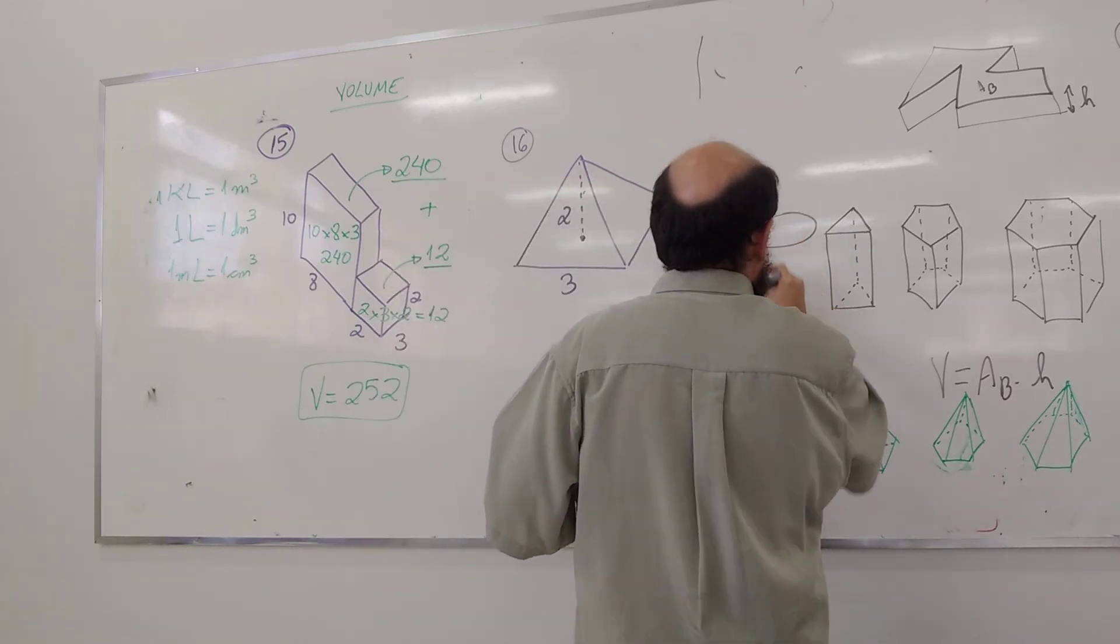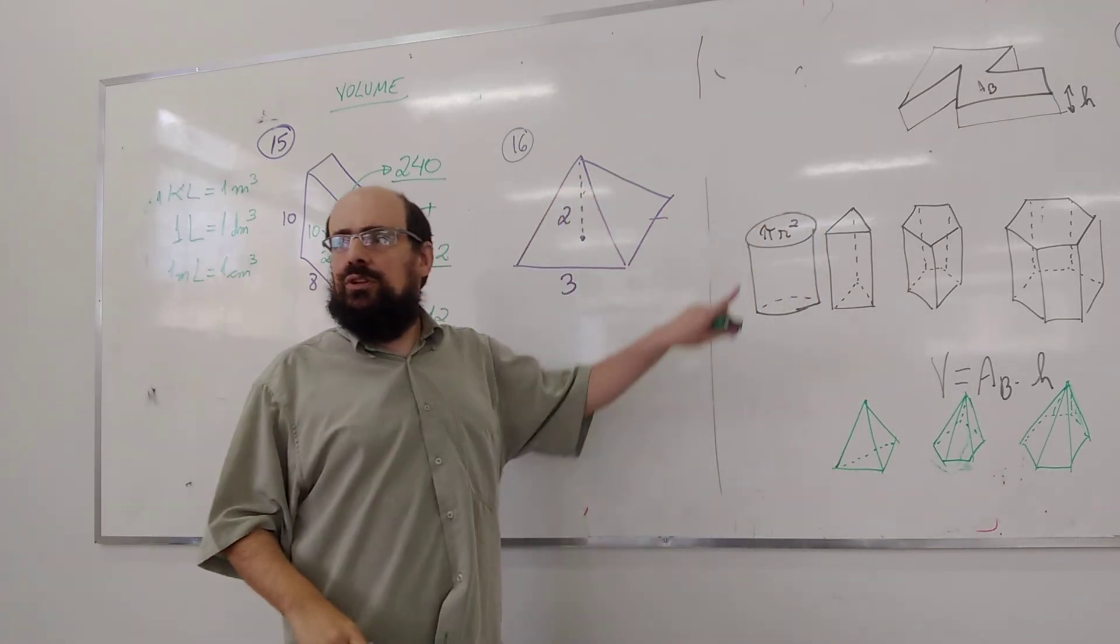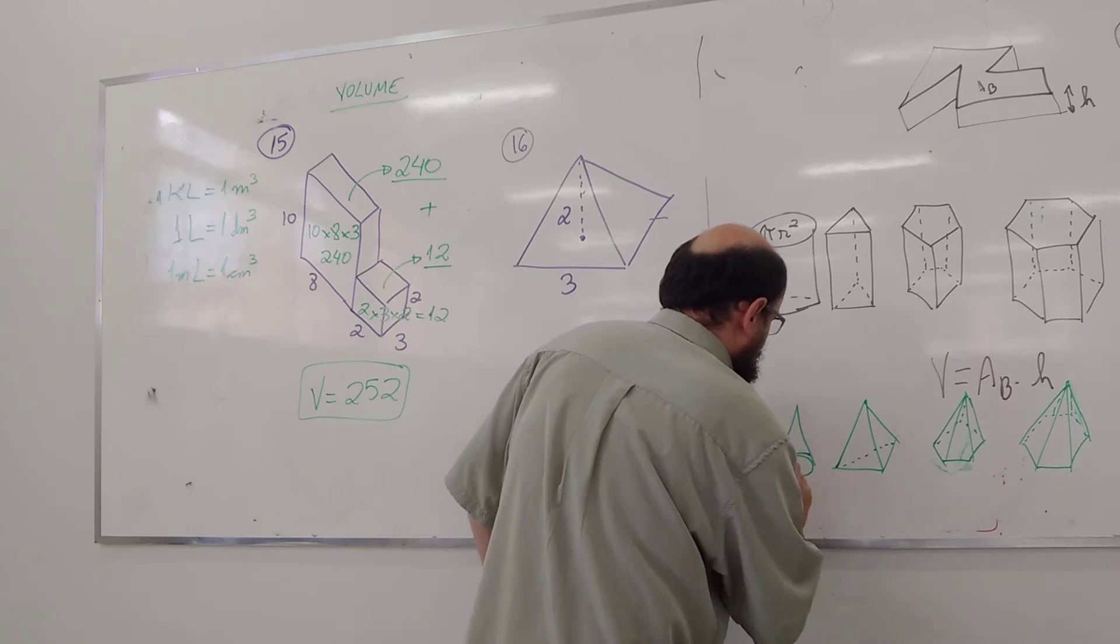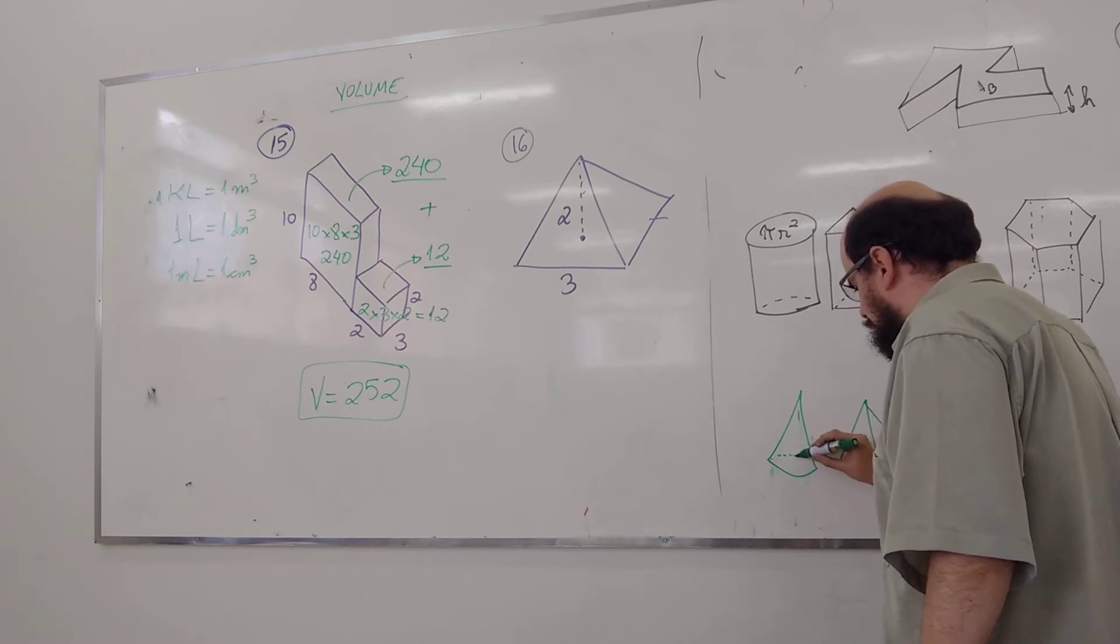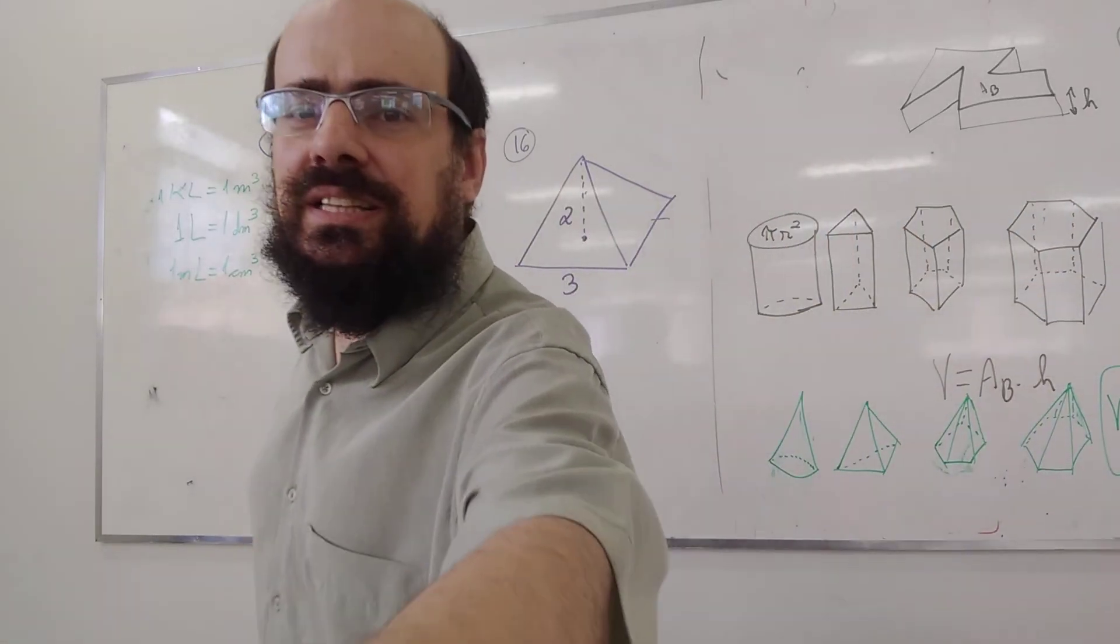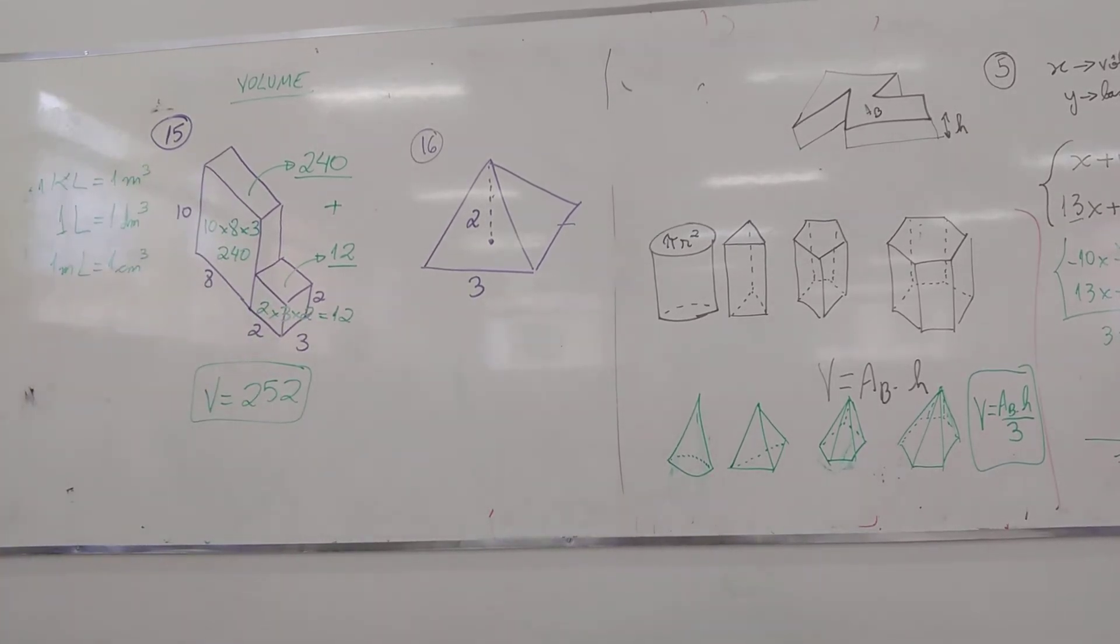Volume do cilindro. Área da base vezes altura. Mas a área da base aqui é pi R ao quadrado. Volume de cilindro é pi R ao quadrado vezes altura. Volume do cone. Pirâmide e cilindro, pra nunca mais esquecer, o volume é área da base vezes altura dividido por 3. Não tá acessível ainda pra vocês entender porque é dividido por 3. Mas é. Como é que eu acho a área de prisma e cilindro? A área da base vezes a altura. Pirâmide e cone, a área da base vezes altura dividido por 3.